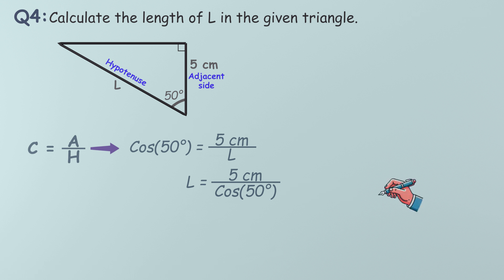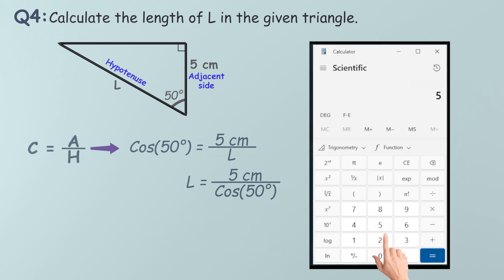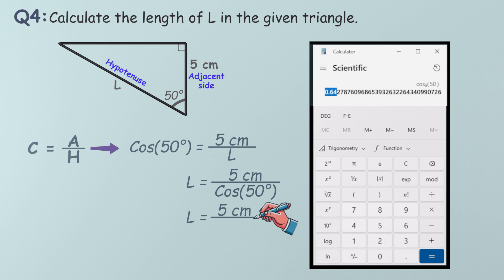Now let's use the calculator. First, type 50, then press the cosine button. The cosine of 50 degrees is 0.64. Now divide 5 by 0.64, which gives us 7.81 centimeters. The length of L is 7.81 centimeters.